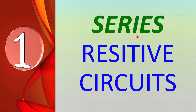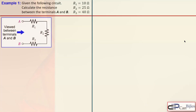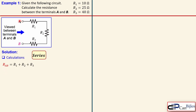Our first part is about series resistive circuits. In our first example, we have the following circuit with three resistors whose values are shown. The question is to calculate the resistance between nodes A and B. Since this is a series combination, there is one path, so R_ab is just the summation R1 plus R2 plus R3, which gives exactly 75 ohms.